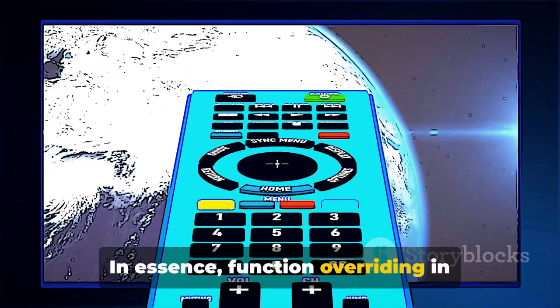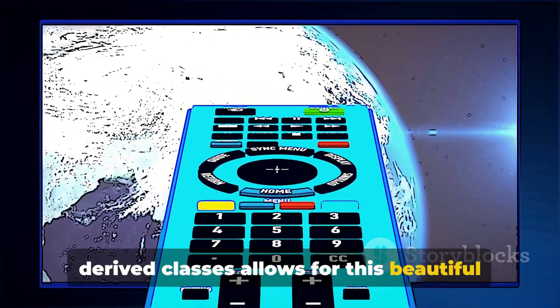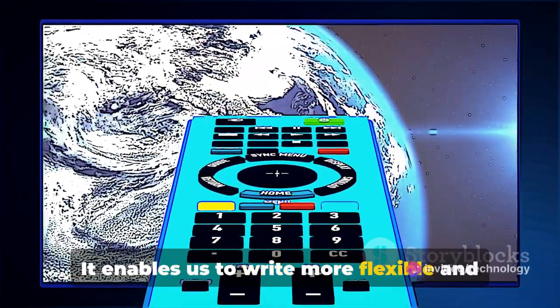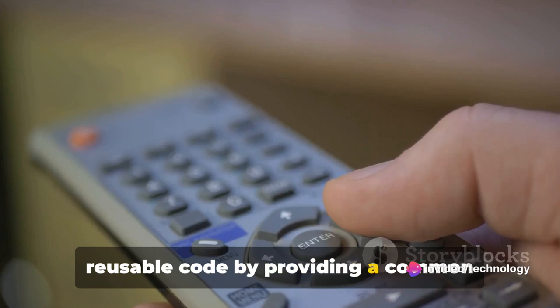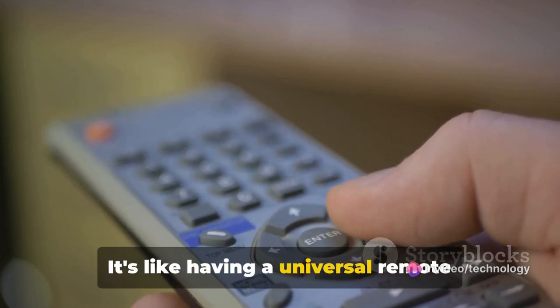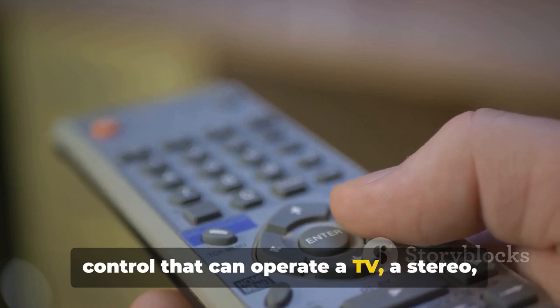In essence, function overriding in derived classes allows for this beautiful dance of polymorphism. It enables us to write more flexible and reusable code by providing a common interface among different classes. It's like having a universal remote control that can operate a TV,